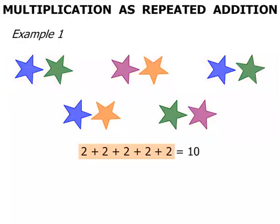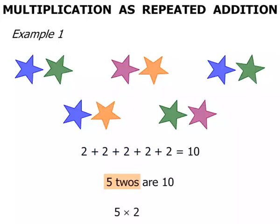Now how many 2's have we got there? We've got 5. So we can say that 5 2's are 10. Using multiplication we can say 5 times 2, and it equals 10.